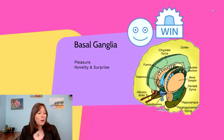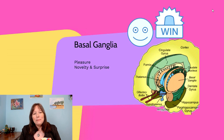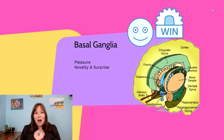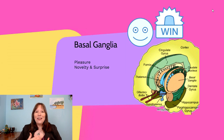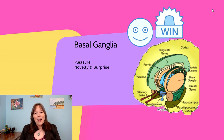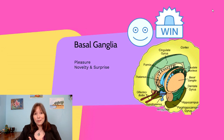One last structure: the basal ganglia. The basal ganglia is a network very much tied to our pleasure system. The neurotransmitter dopamine tends to bind on many receptors in the basal ganglia, and this is connected with novelty, surprise, and pleasure. For example, if you're gambling and you win, you're going to release a lot of dopamine — the basal ganglia is very much the pleasure center.